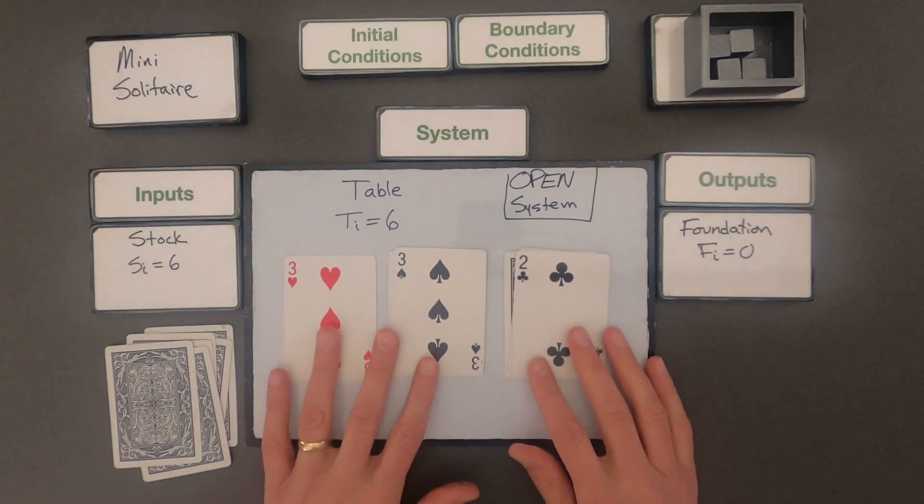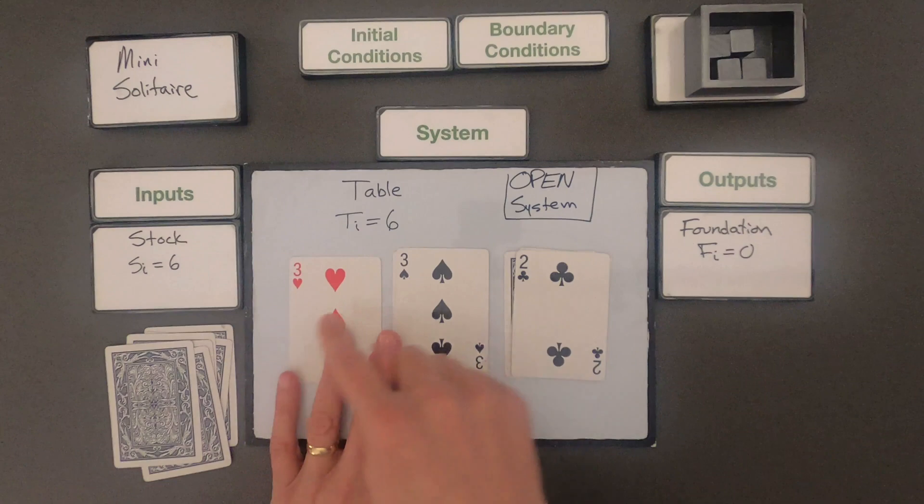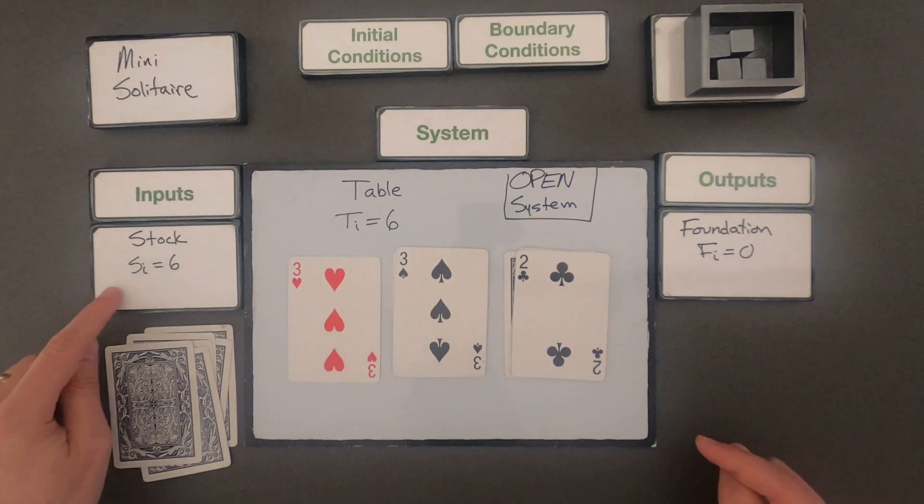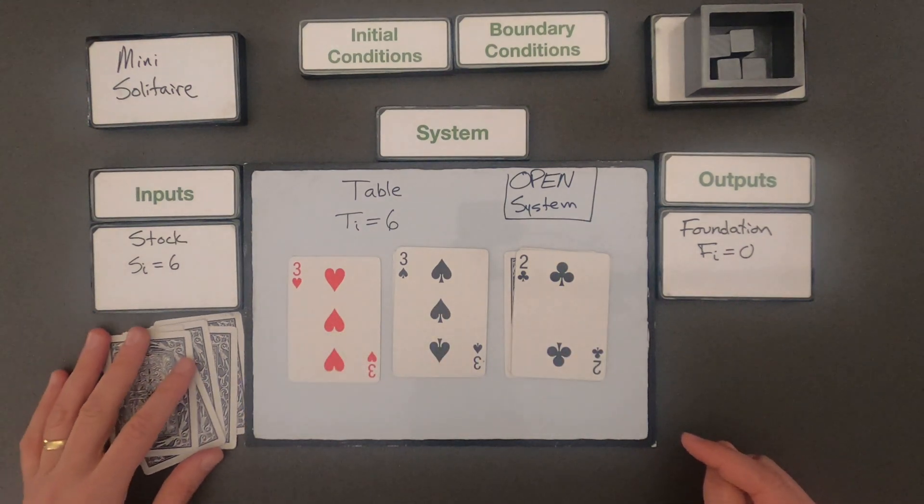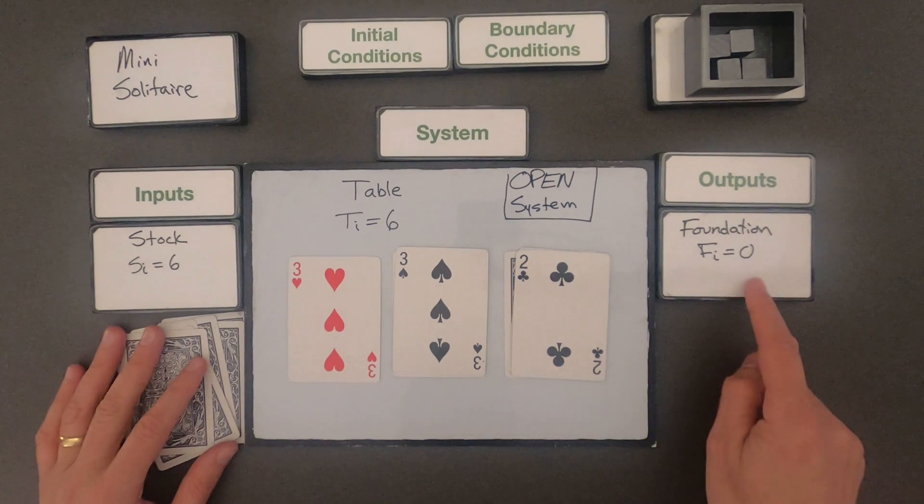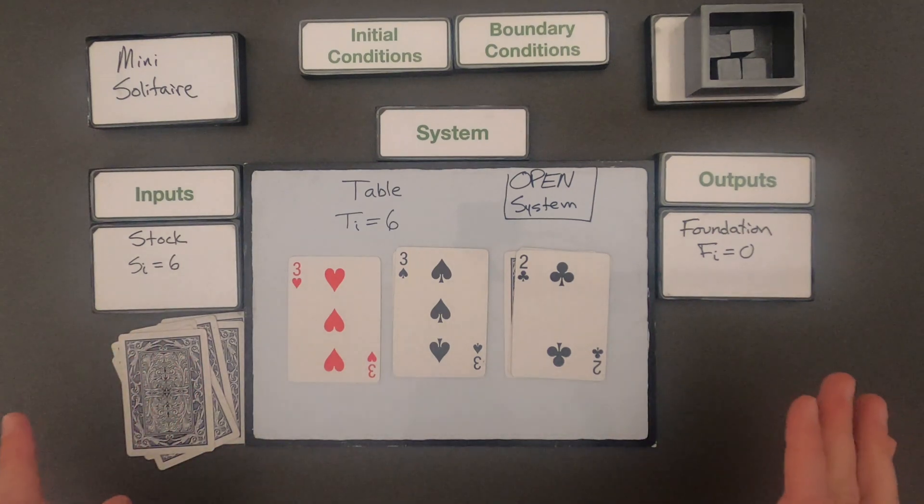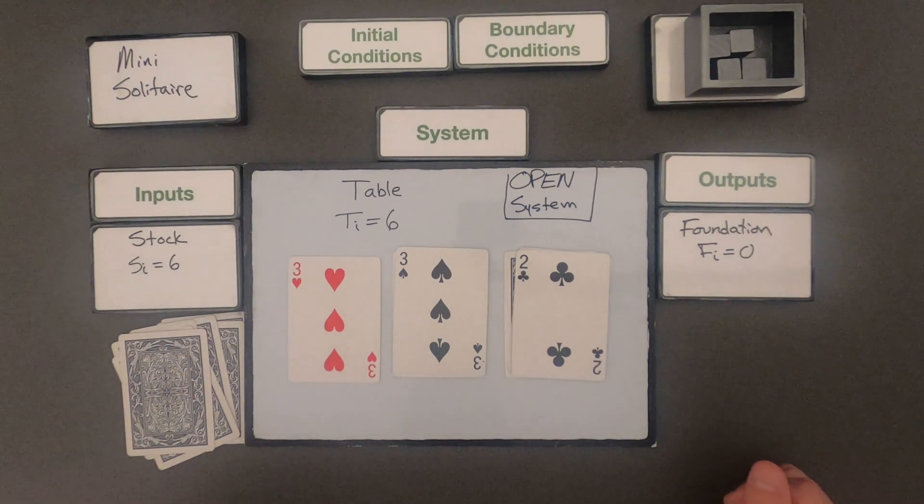So I've defined this as an open system since cards can move through it. My initial stock is just six cards. I've got six on the table and zero in the foundation. So watch me play the game and then try to figure out what are the conditions or the final conditions.